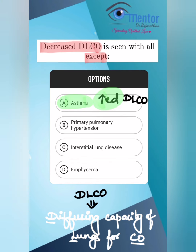Question number five was about DLCO. What is DLCO? Diffusing capacity of the lungs for CO, that is carbon monoxide. This is also known as transfer factor — it is the lung's ability to transfer gas from inspired air to the bloodstream. We test this using 0.3% carbon monoxide. Where do we get low DLCO? We get it in PIE: primary pulmonary hypertension, interstitial lung disease, and emphysema. In interstitial lung disease, the thick alveolar capillary membrane prevents gas transfer. In emphysema, the alveoli are destroyed. Note that asthma has a high DLCO.